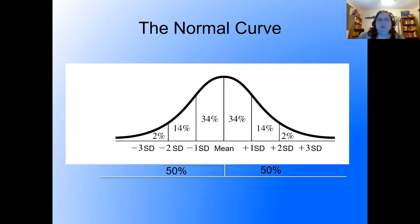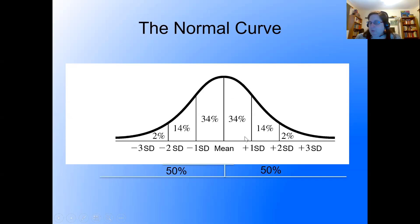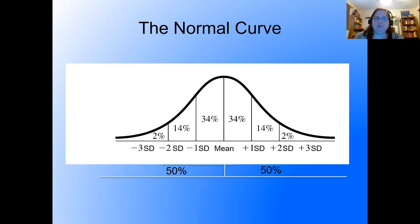There's a rule of thumb to put all this information together. These numbers are not perfectly precise — it's more like 34.13%, 13.59%, and 2.15% — but I don't want you to worry about that. I shared those in case you were curious about the exact figures, but the rounded numbers are close enough for our purposes.